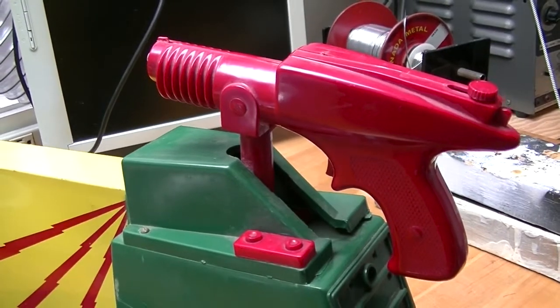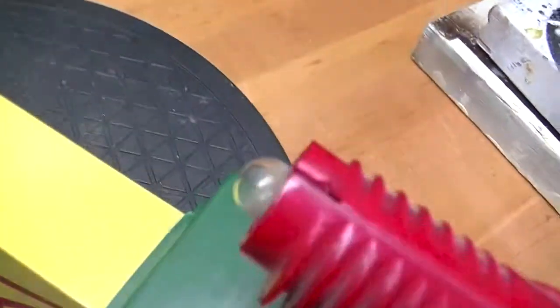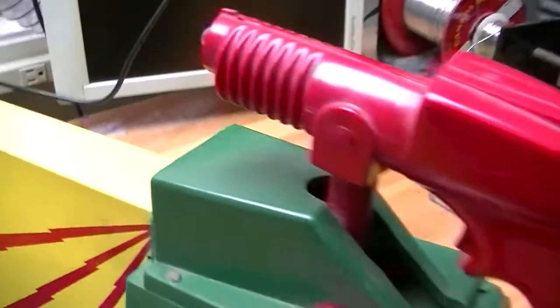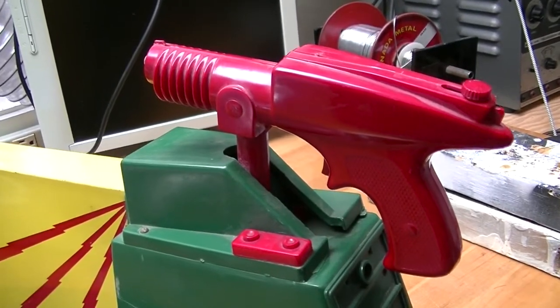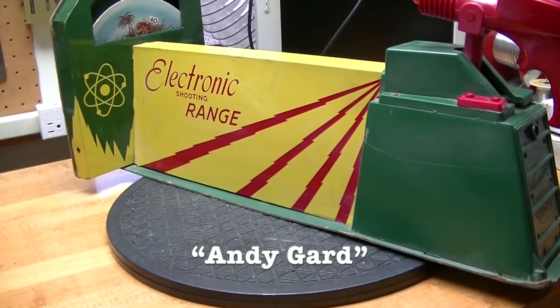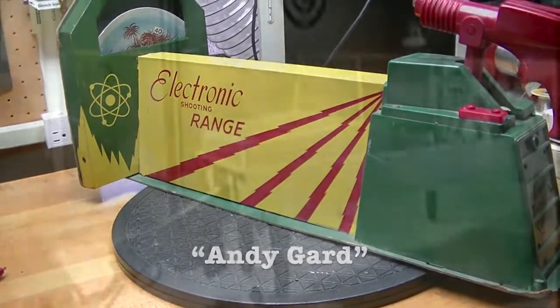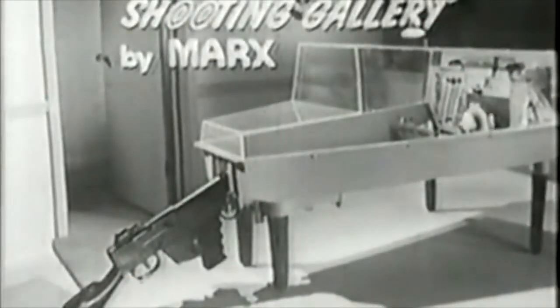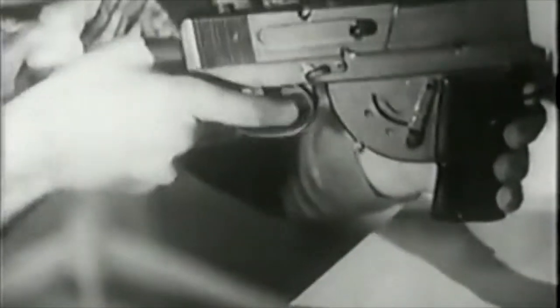I saw this lithographed tinplate toy shooting range being advertised by a fellow in Owen Sound, Ontario. It really looked interesting, so I decided it was worth the drive to go and get it. All I knew was that it was made by a company I'd never heard of, called Andy Gard. I imagined it was going to be something like the Electroshock Shooting Gallery by Marx that I lusted after as a child.